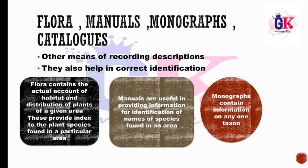Other taxonomical aids include Flora, Manuals, Monographs, and Catalogs. Flora contains the actual account of habitat and distribution of plants of a given area and provides an index to the plant species found in a particular area. Manuals are useful in providing information for identification of names of species found in an area. Monographs contain information on any one particular taxon.